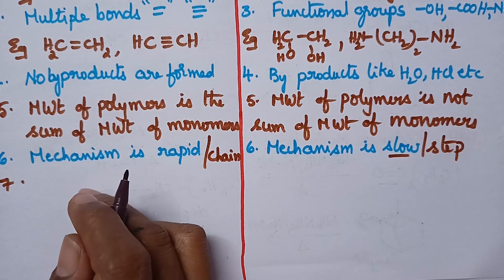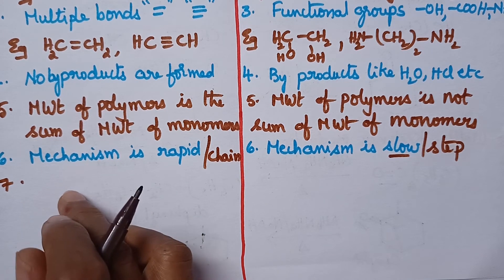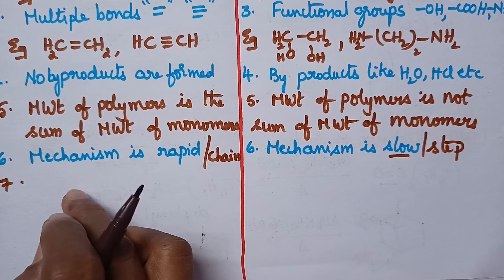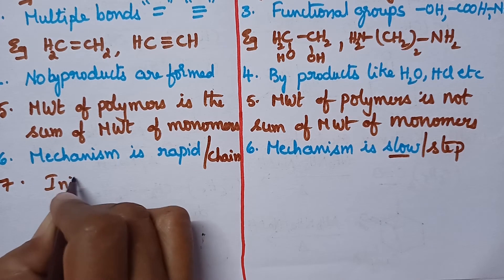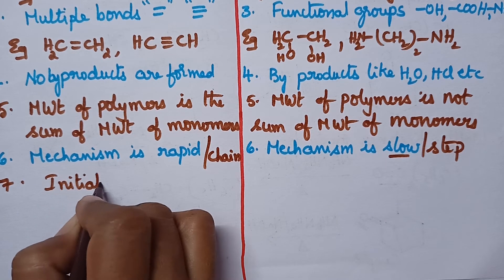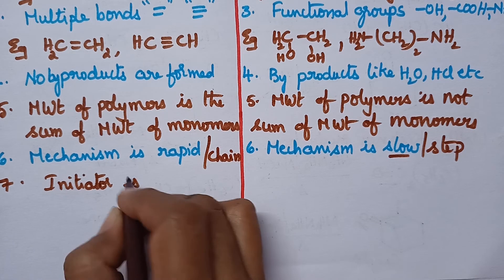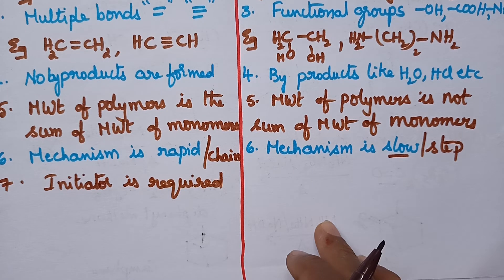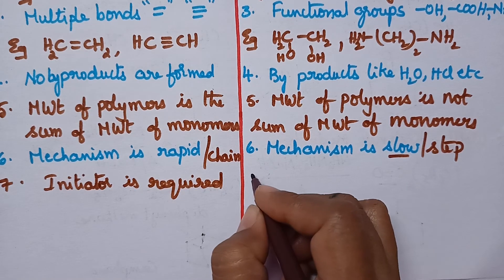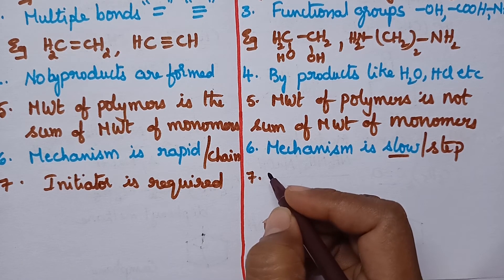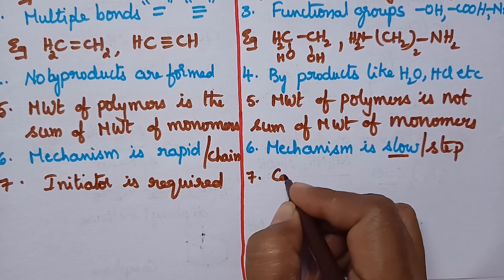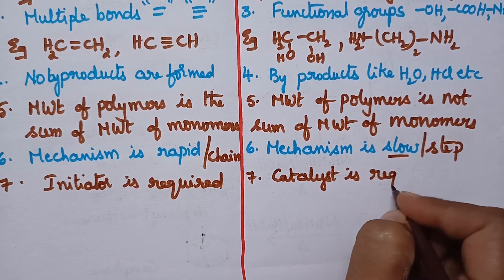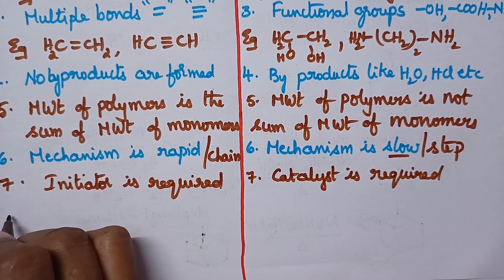During addition polymerization, an initiator is required to initiate the reaction. In the case of condensation polymerization, a catalyst is required in order to conduct the polymerization.